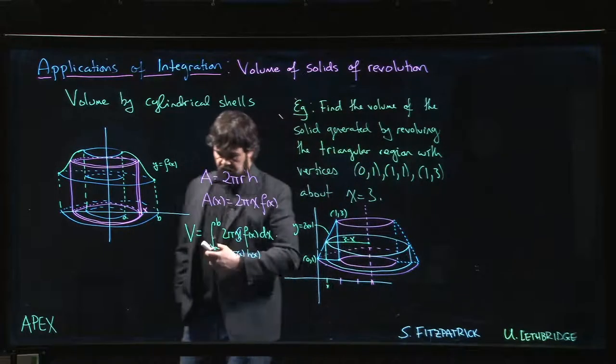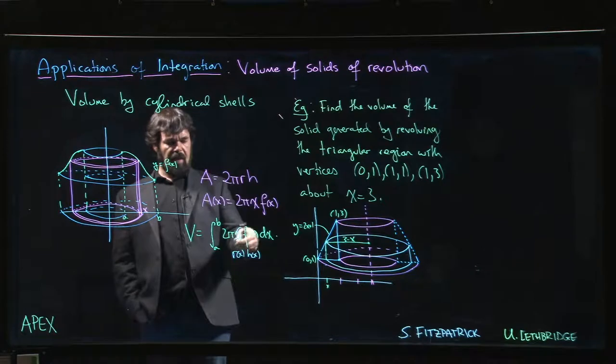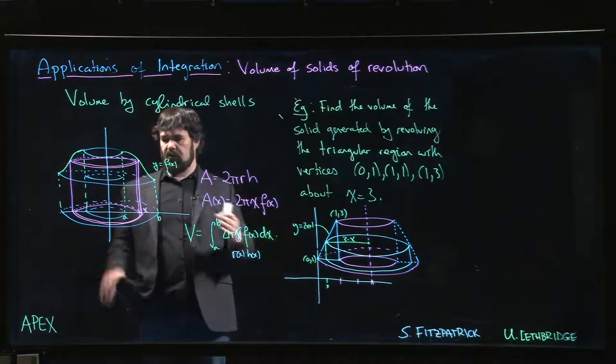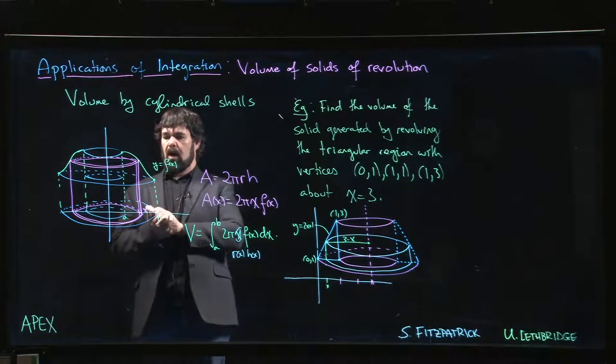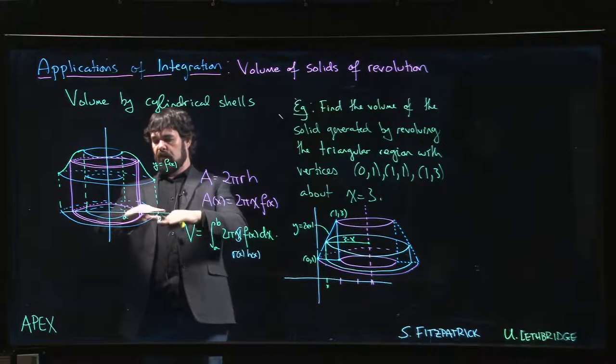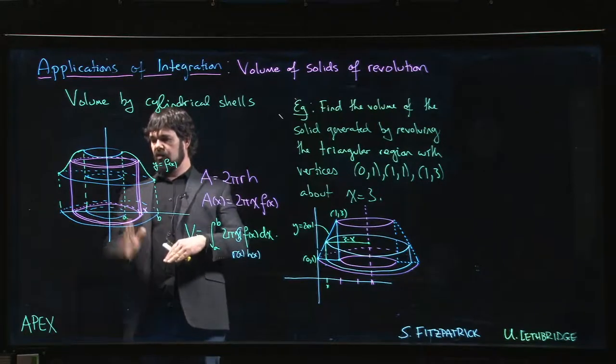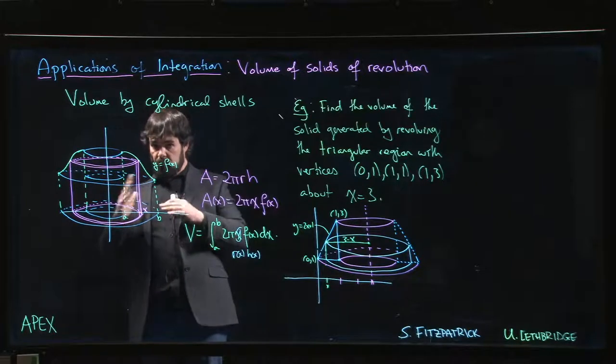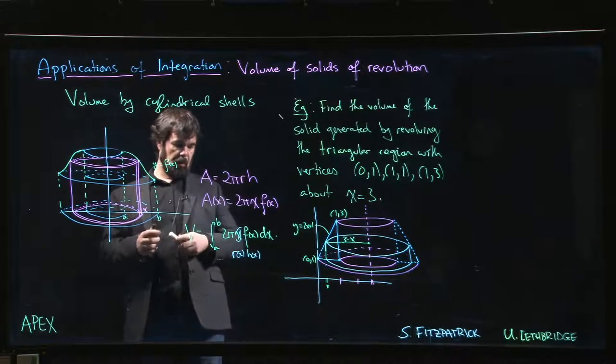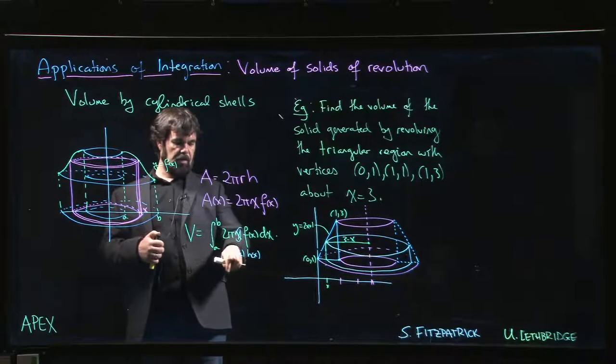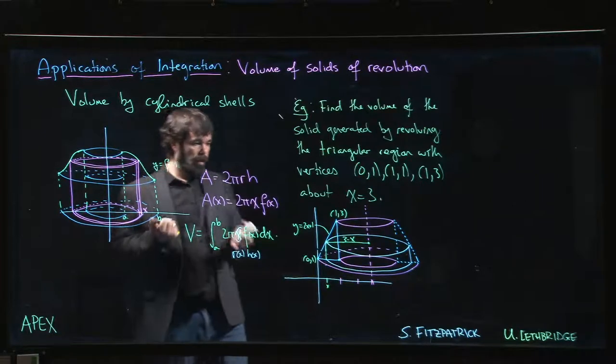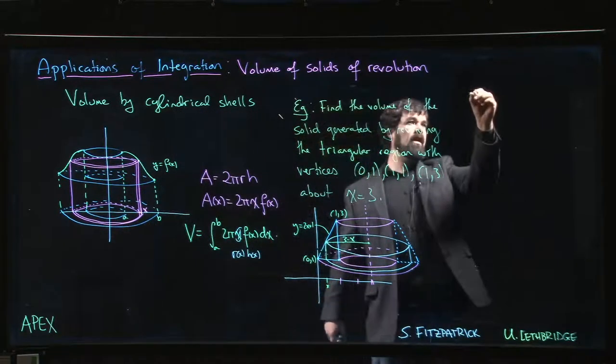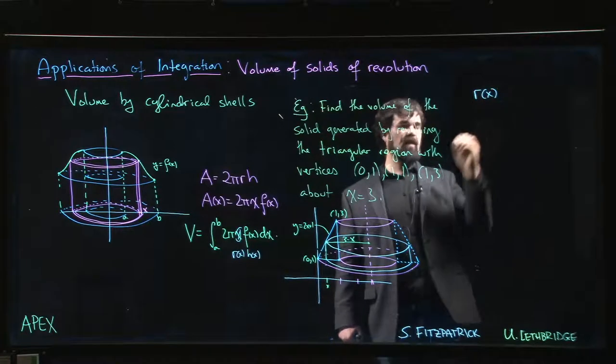And we want to set things up. So in the shell method, instead of just saying x times f of x, really applies to this kind of standard scenario where our region kind of lies along the x-axis and we're revolving around the y-axis. And if we change those things up, we have to be a little bit more careful. So x could be replaced now just generally with radius as a function of x. So what is the radius in terms of x now?